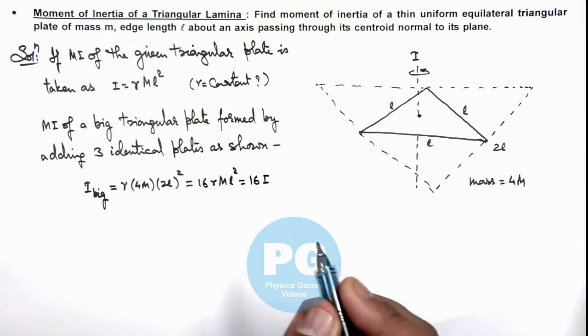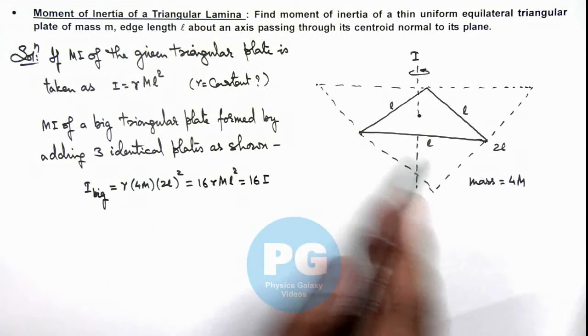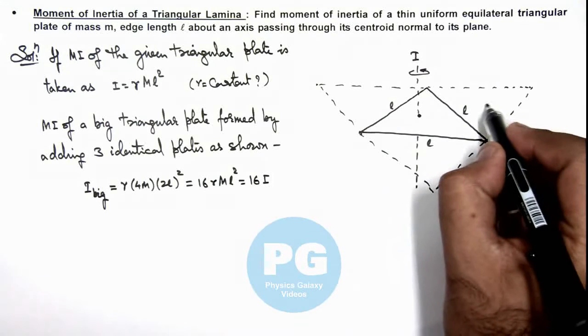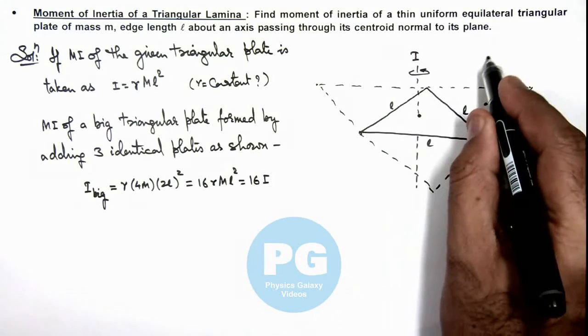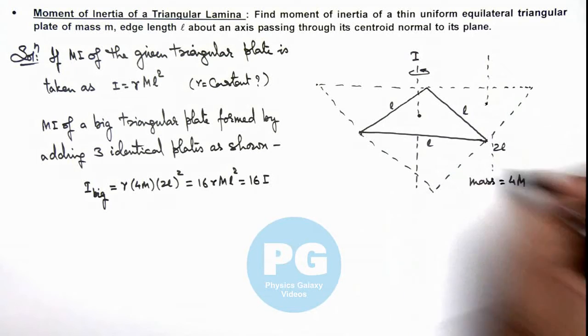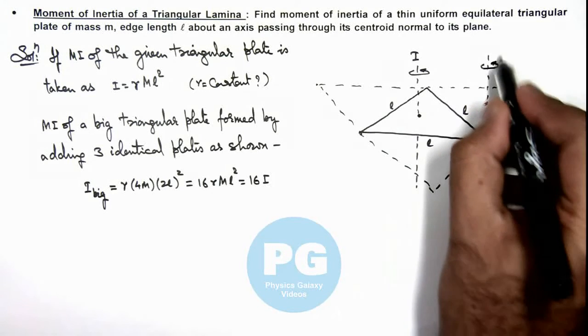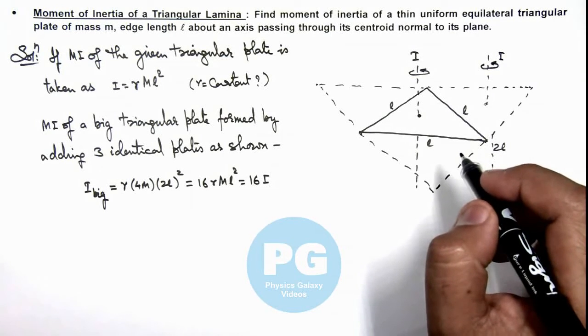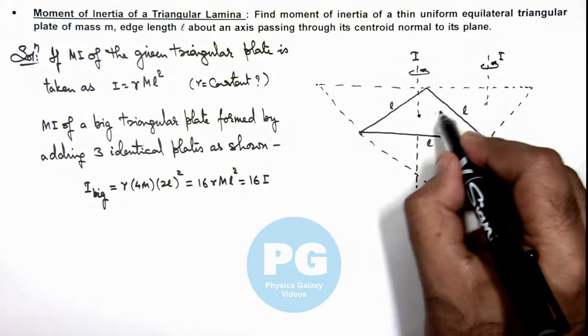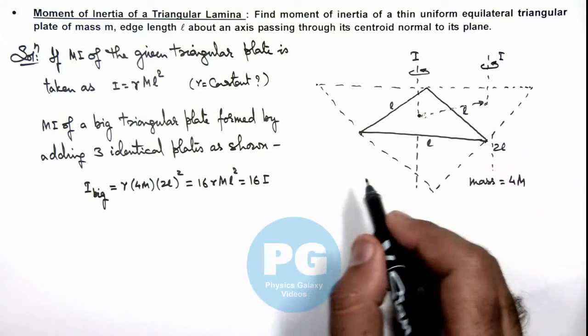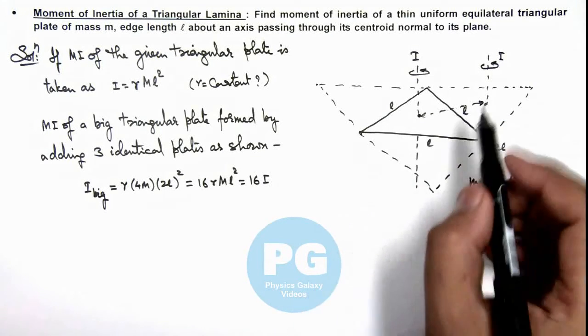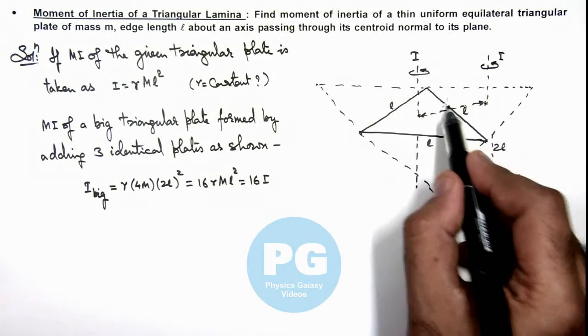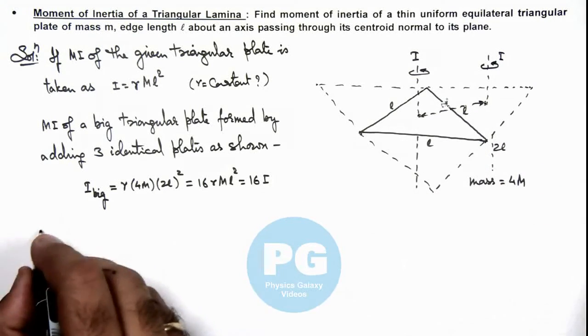Now in this situation if we calculate this I_big by using parallel axis theorem as three plates are added, and we consider this plate and an axis which is passing through its centroid, moment of inertia about this axis will be I. And here if we calculate the separation between these two distances, we can see distance between these two centroids, this distance we call d.